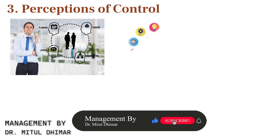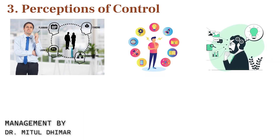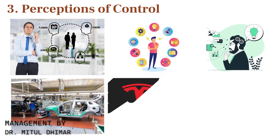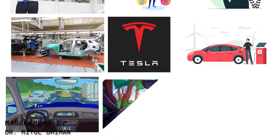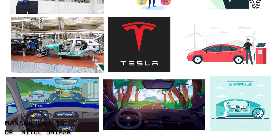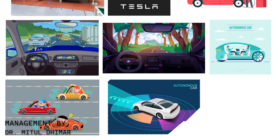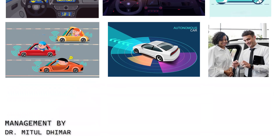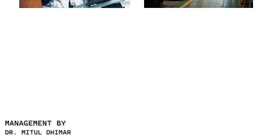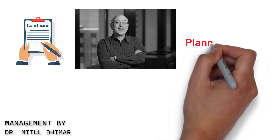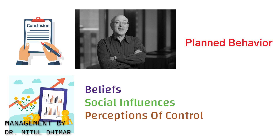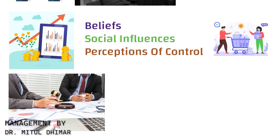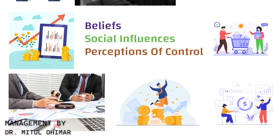Number three: Perception of Control. Perception of Control refers to our belief about the factors that may help or hinder our ability to perform a behavior. Let's consider the automobile industry. Tesla has addressed perception of control by offering electric vehicles with features like autopilot and over-the-air updates. By giving customers a sense of control over their driving experience and the ability to stay up to date with the latest technology, Tesla has attracted a loyal customer base and disrupted the traditional automobile market. In conclusion, Henry Mintzberg's Theory of Planned Behavior provides valuable insight into how beliefs, social influences, and perception of control shape consumer behavior. By understanding these factors, businesses can develop strategies to influence consumer choice and drive sales.